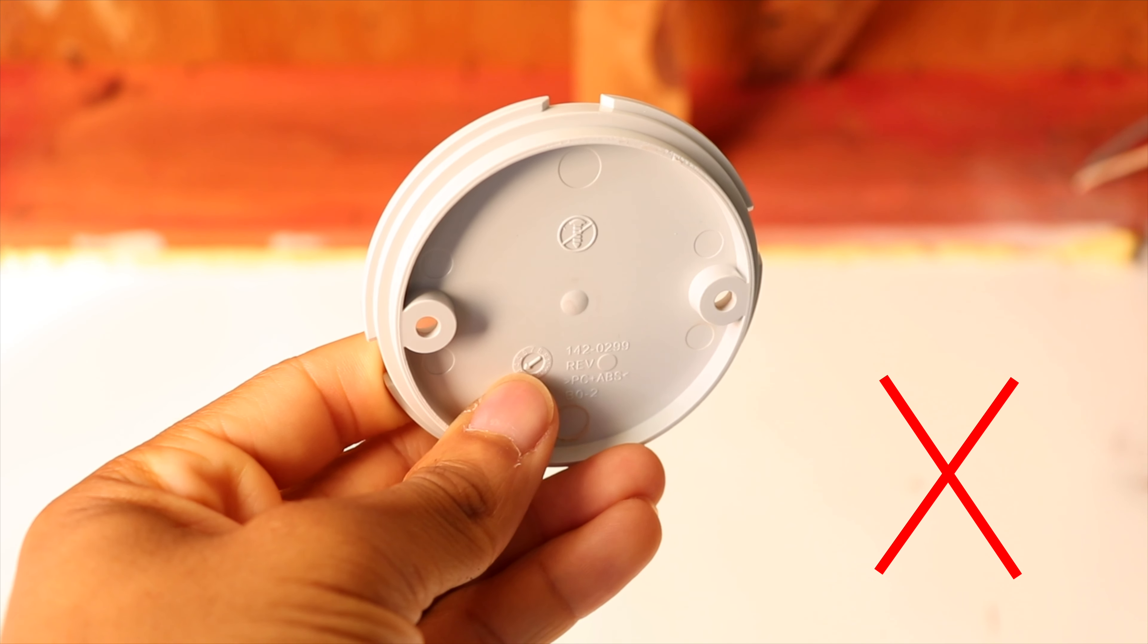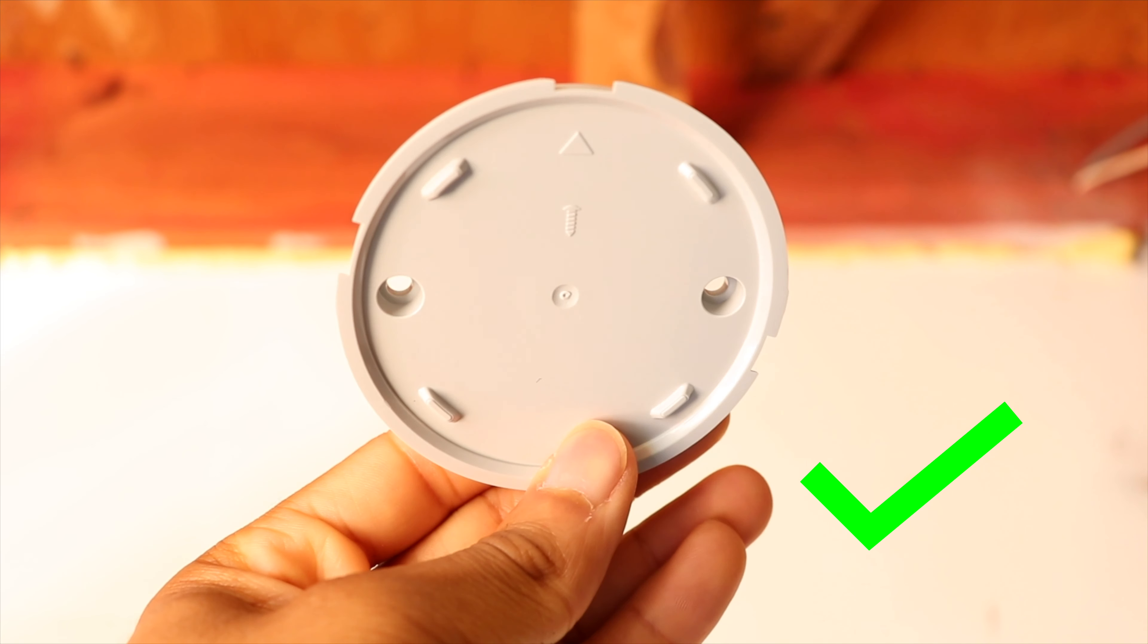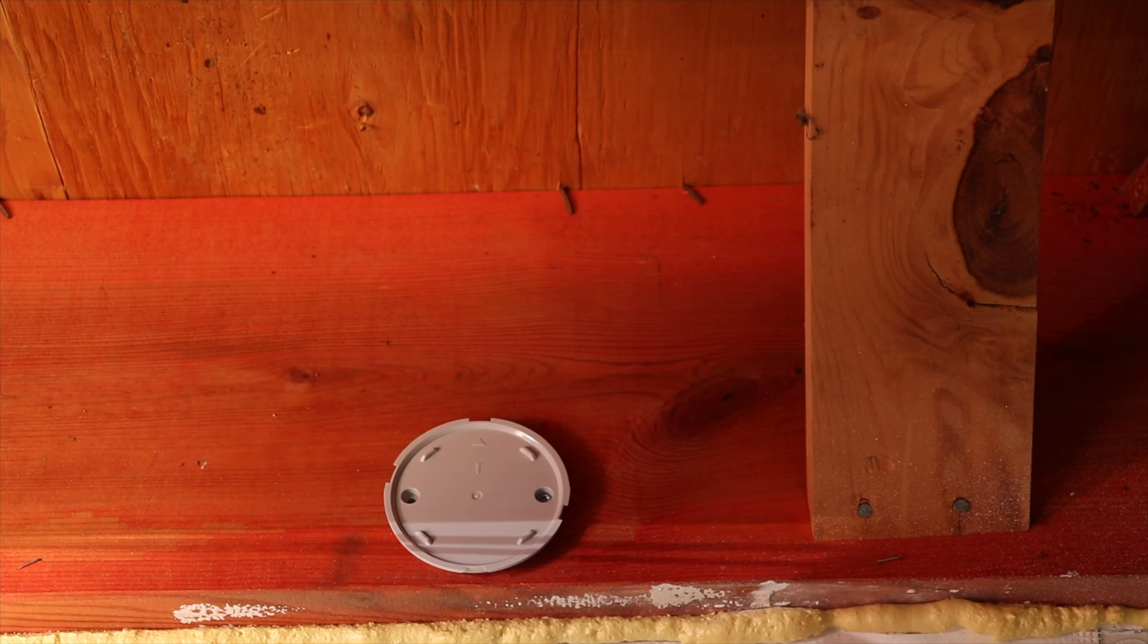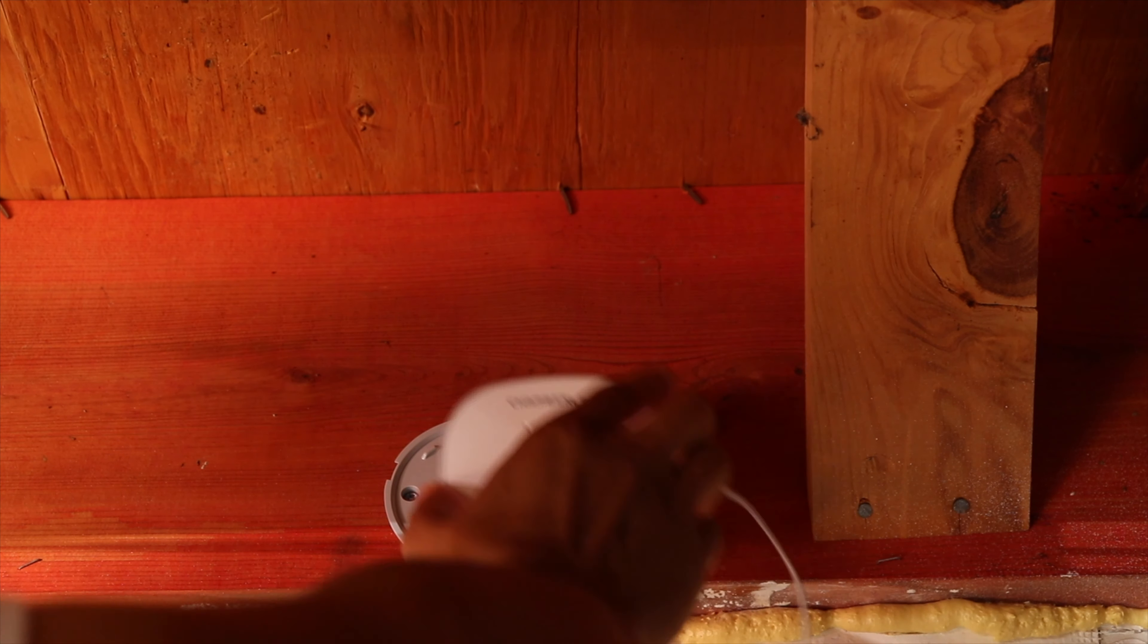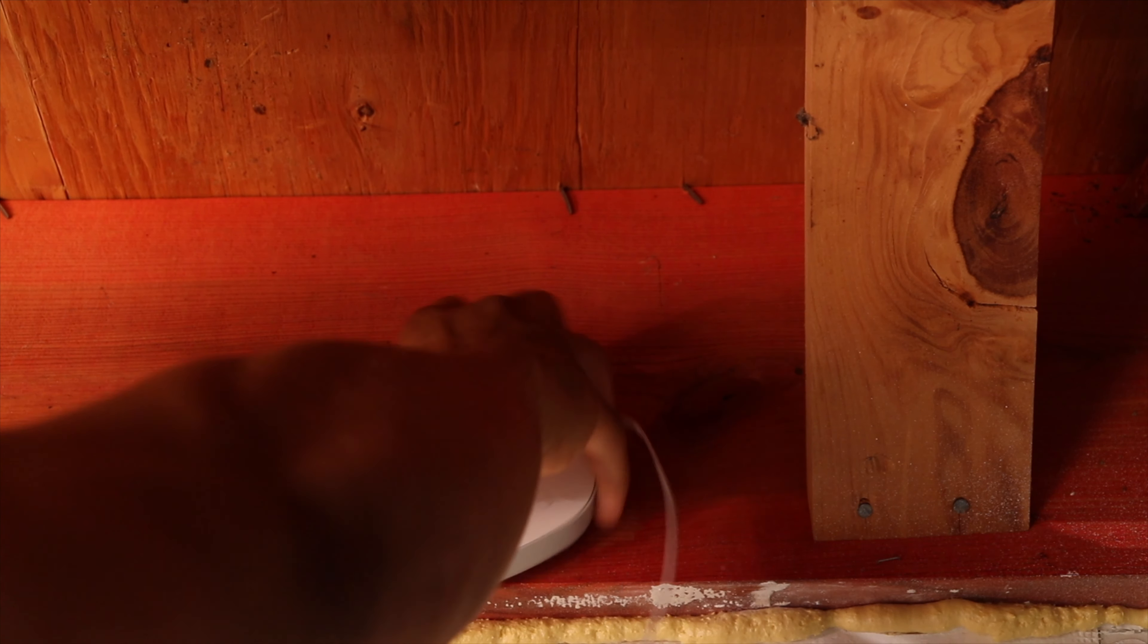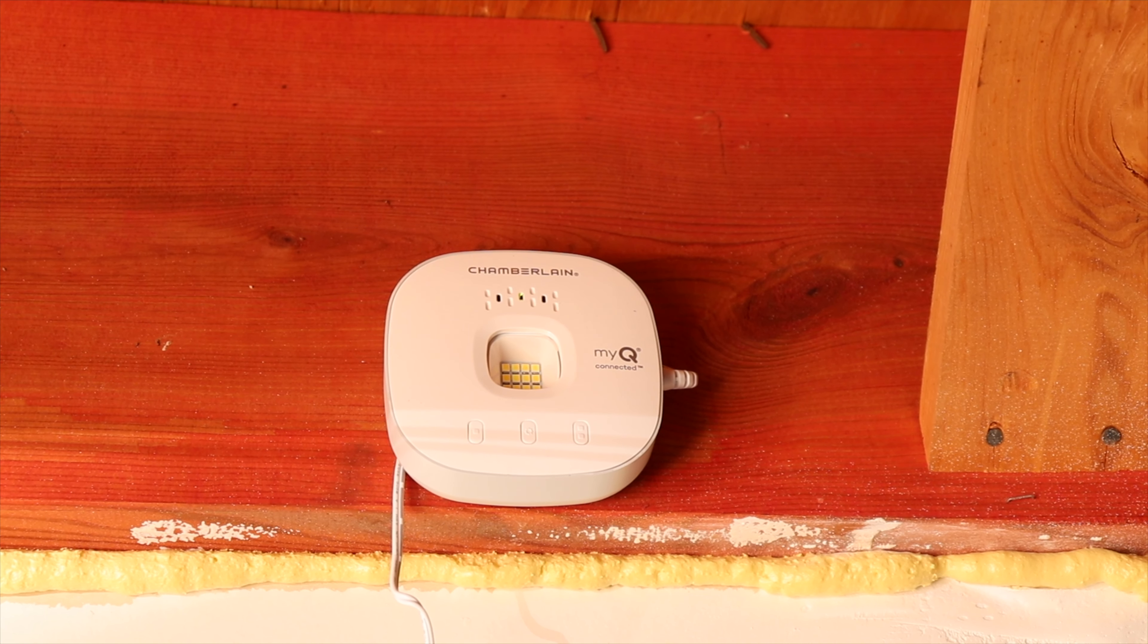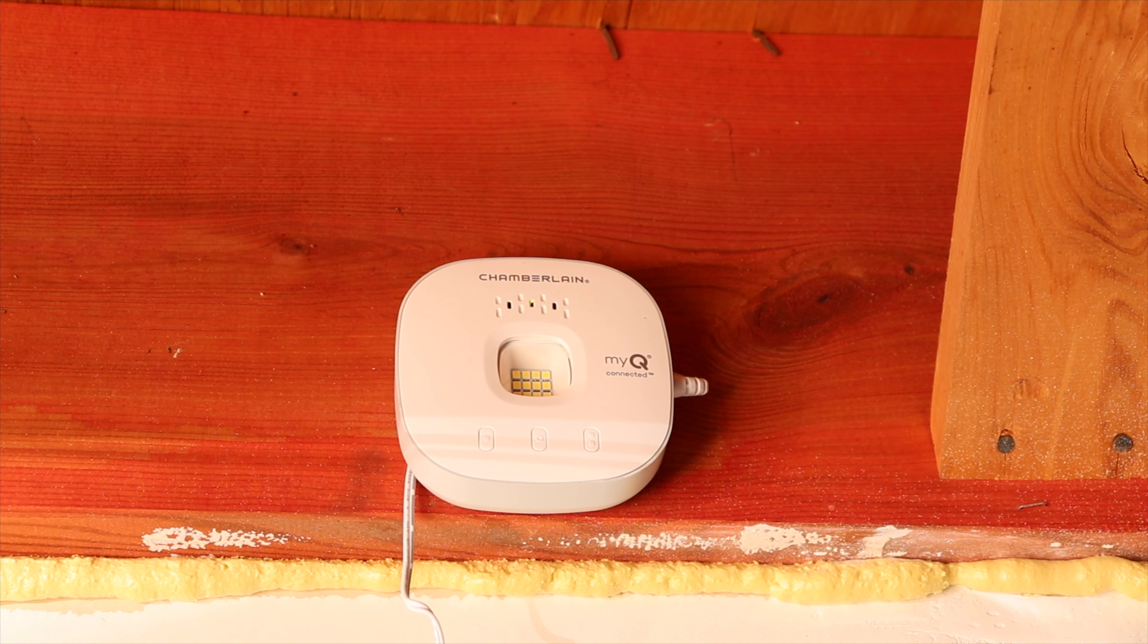When you install the mounting plate, you want to make sure it's facing the correct way. So they do recommend installing the control hub at least six feet off the ground. So to make my life easier, I decided to install it directly onto the wood framing up towards my ceiling and the control hub attaches to the mounting plate pretty much how you would attach a smoke detector. And then from there, you're basically good to go.